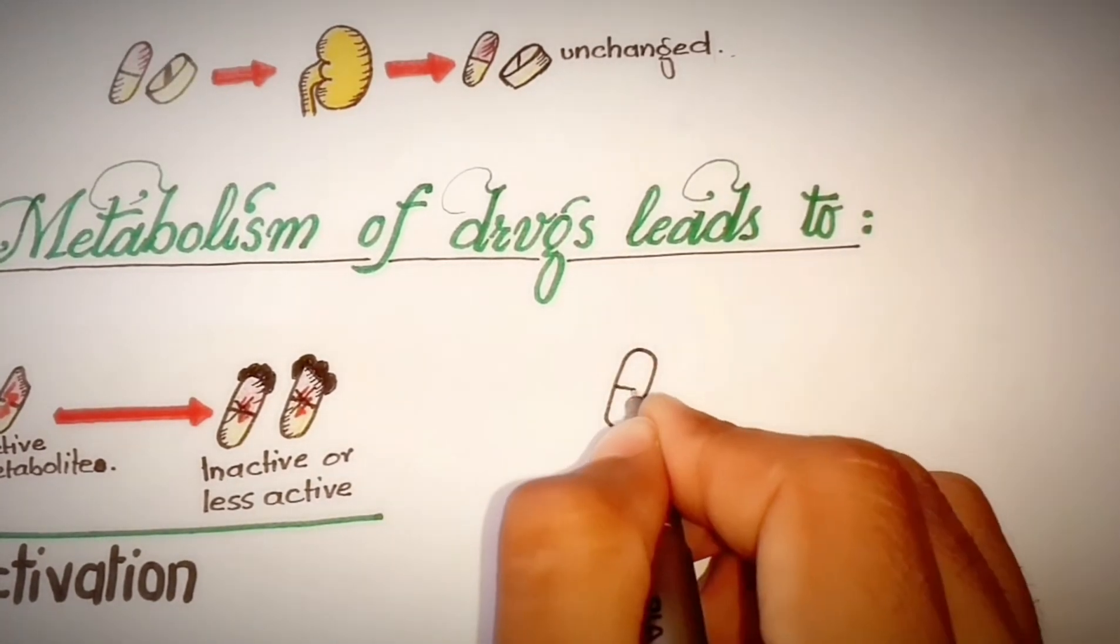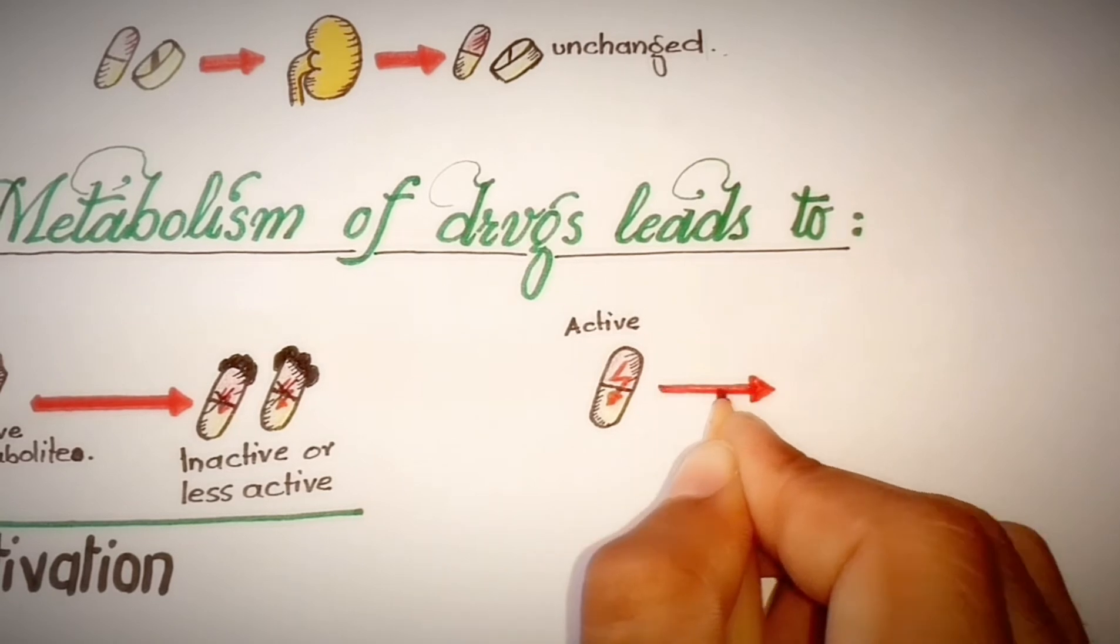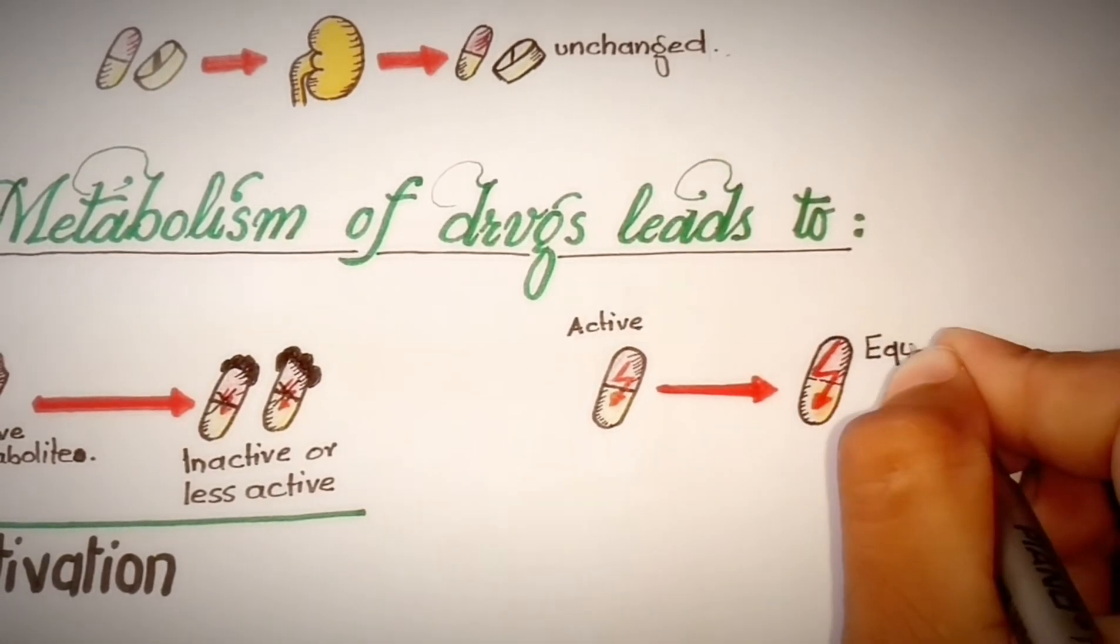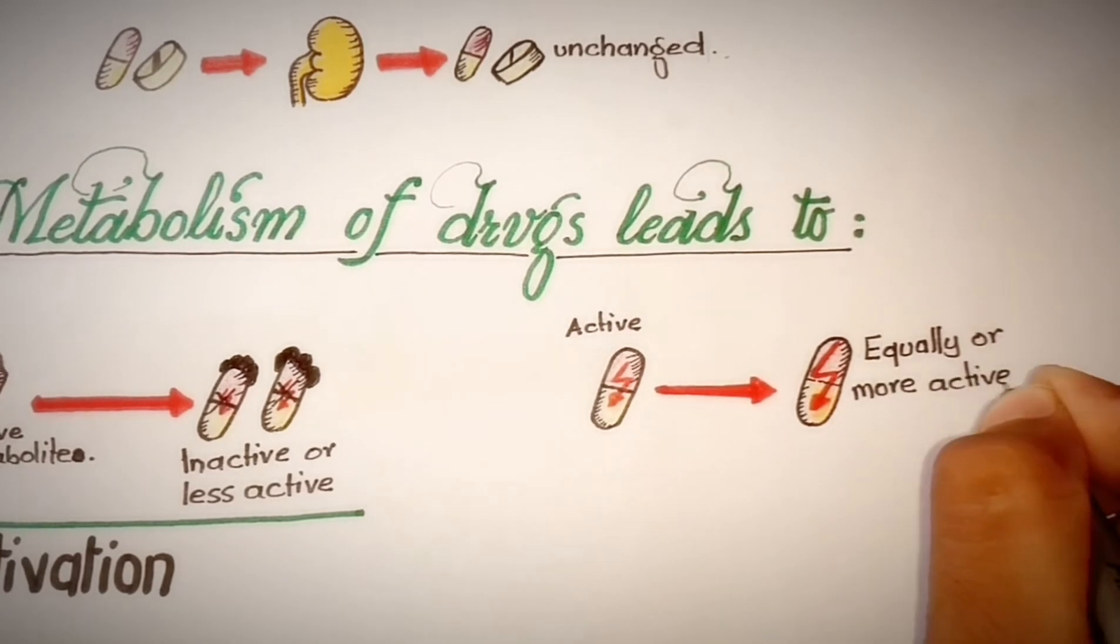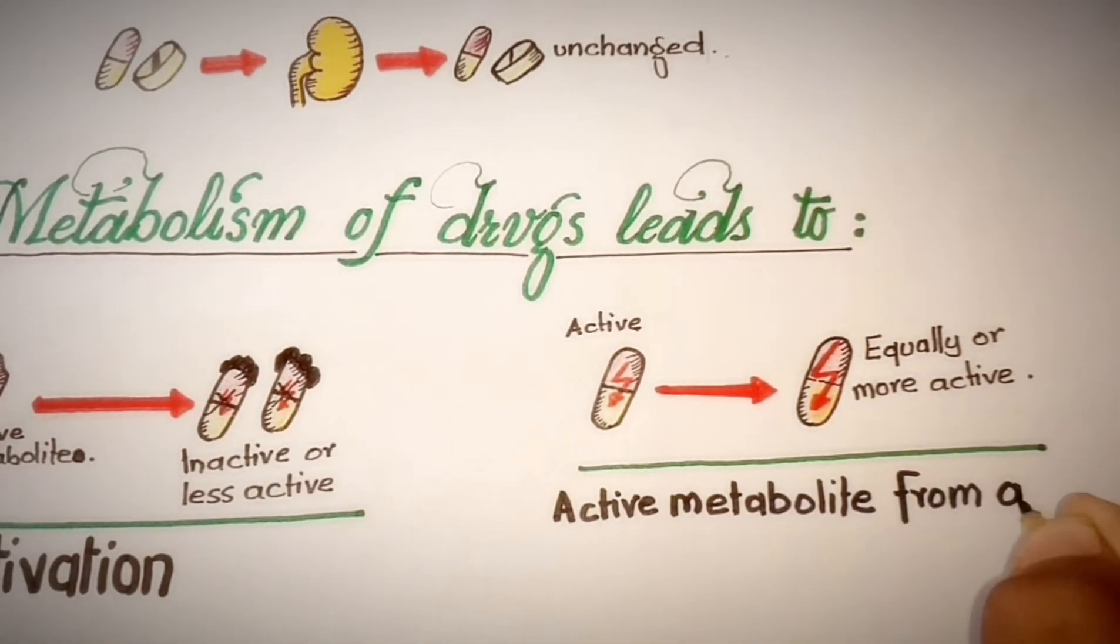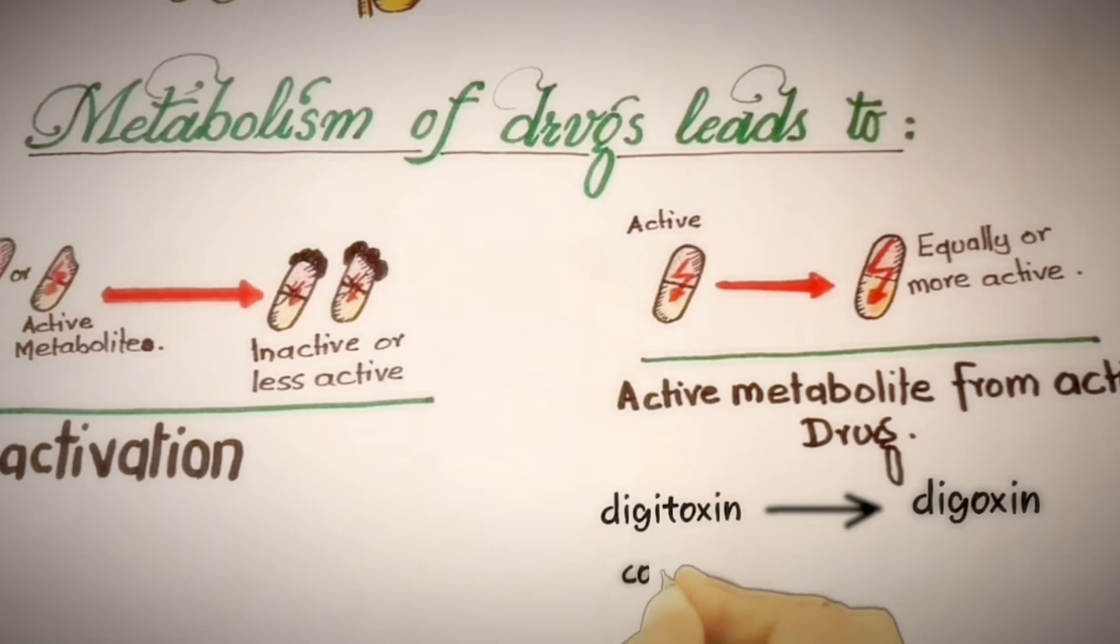Second is active metabolite formation by another active drug. Many drugs have been found to be converted to equally or more active metabolites, for example digitoxin converts to digoxin and codeine to morphine inside the body.